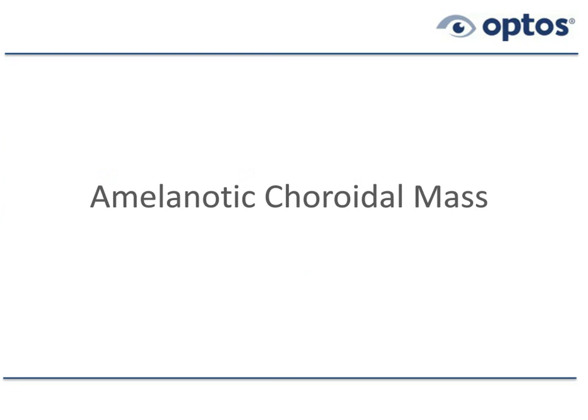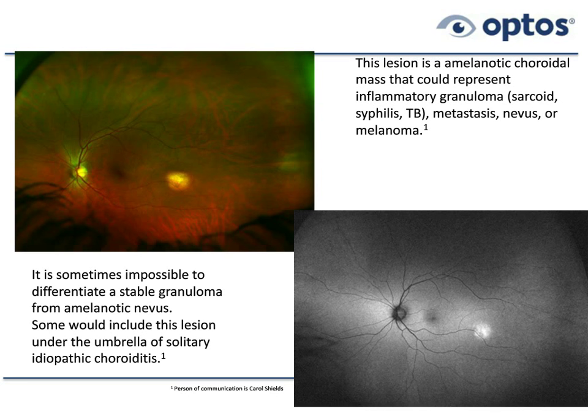An interesting disorder: an amelanotic choroidal mass — at the level of the choroid without pigment. We can actually have malignant melanomas which are amelanotic. Here's the color composite image alongside the autofluorescence image. Notice this lesion is hyperautofluorescent, meaning the RPE in that zone is sick or metabolically very active. The lesion could be an amelanotic malignant melanoma, or an inflammatory lesion such as an inflammatory granuloma due to sarcoidosis, syphilis, or TB.